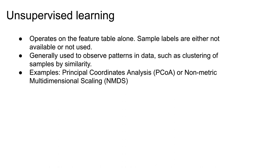Now that we've talked about the data, I want to talk about two high-level categories of machine learning methods. The first is unsupervised learning. The easiest way to tell whether you're working with an unsupervised learning method is that it operates on the feature table alone — sample labels either are not used or are not available. These methods are generally used to discover patterns in data, for example understanding how samples might cluster together based on similarity.